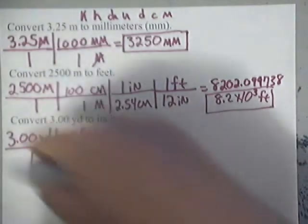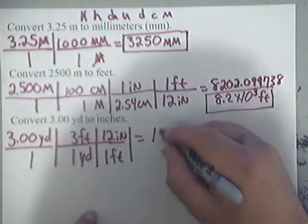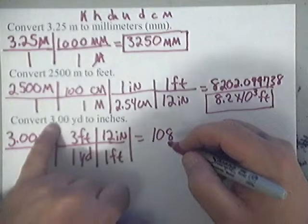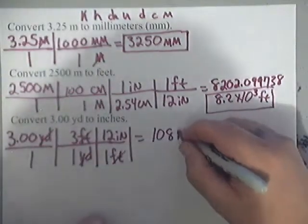So basically what we have here is 3 times 3 is 9, 9 times 12 is 108, and that's 3 sig figs, just like we have here. So that's 108 yards cancel, feet cancel, leaving us with inches.